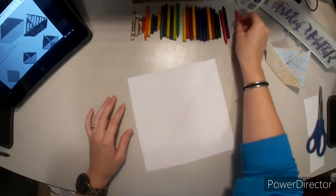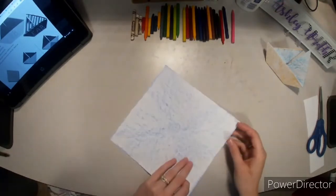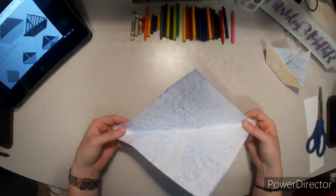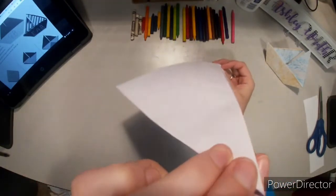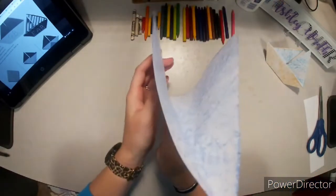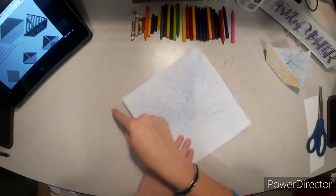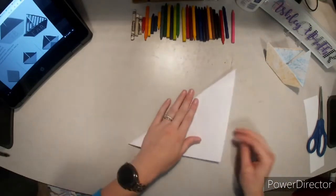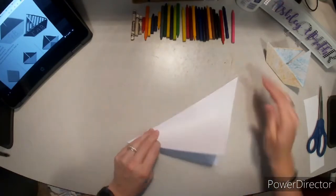Okay, so whichever side you start on you want it to be in a valley. Like this is a mountain when it's like this, and when it's like this it's a valley. So what I'm going to do is make two valleys to make an X. So I already have one right there from when we were making it into a square.